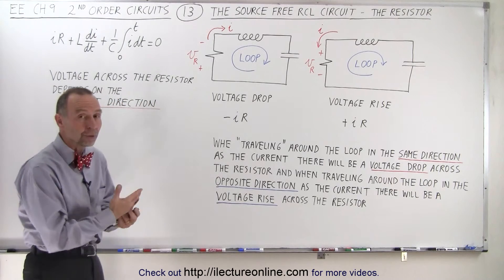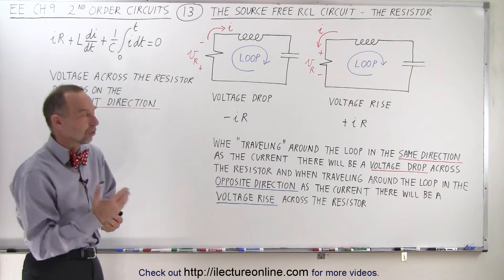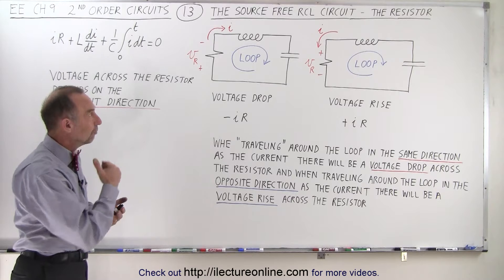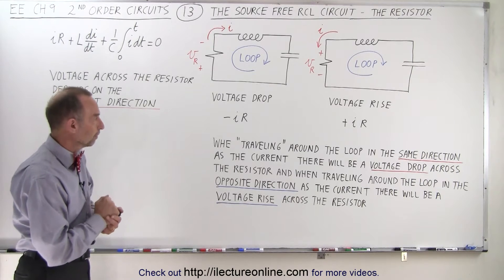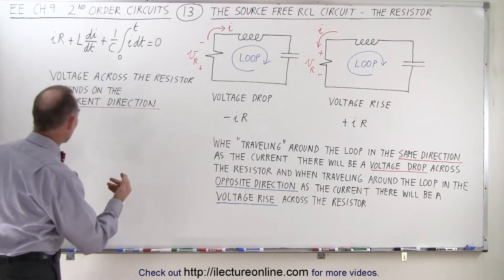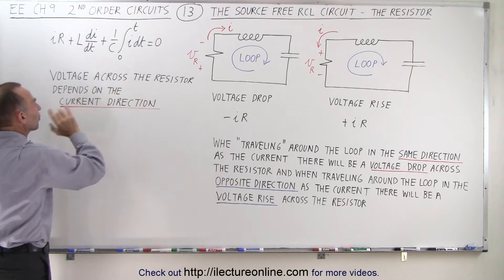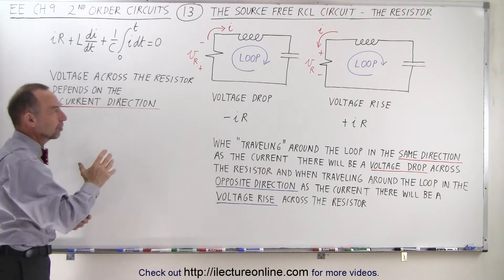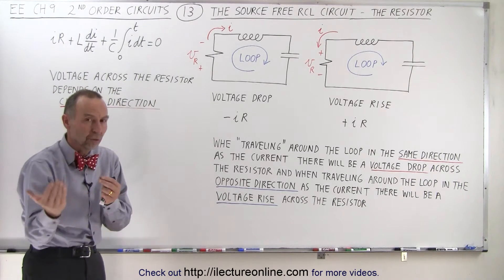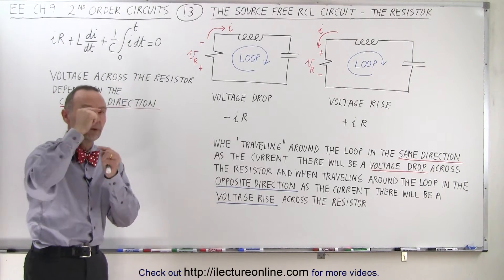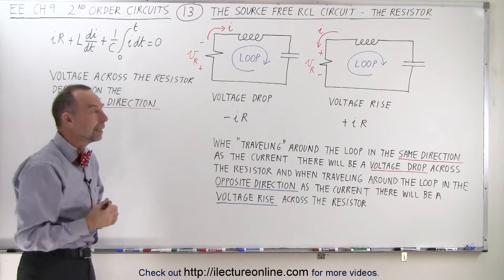Let's start with the easiest of the three: the resistor in a source-free RCL circuit. It turns out that the voltage across the resistor depends on the current direction. So if the current direction is in one direction, the polarity of voltage will be accordingly.